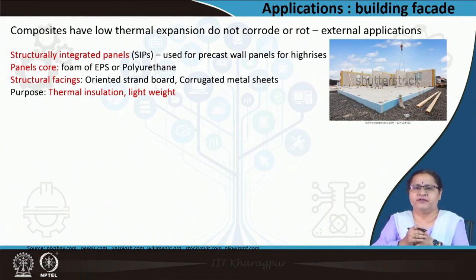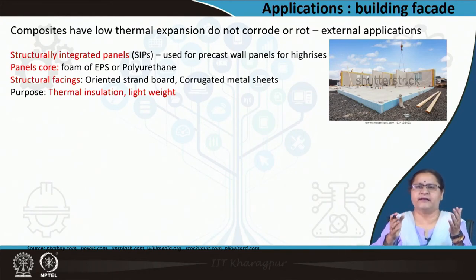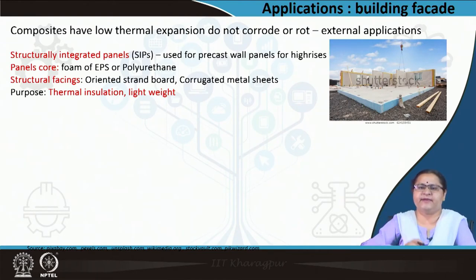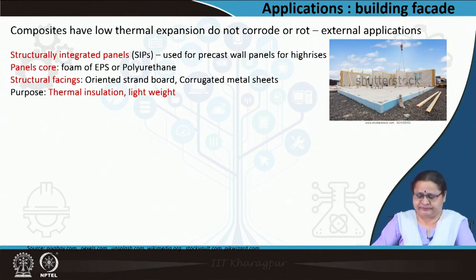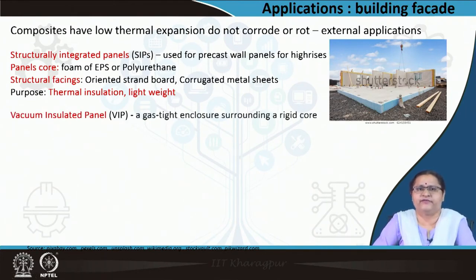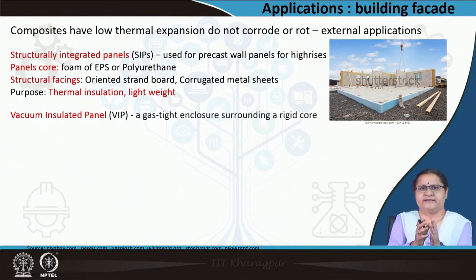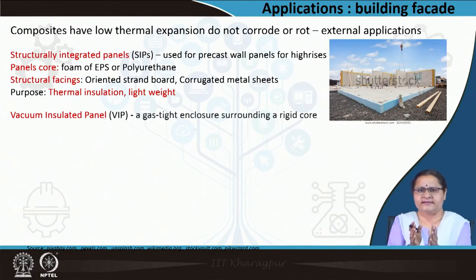The advantage of SIPs is thermal insulation combined with light weight. We can apply them where the structural system is there and use SIPs as filler walls. Light weight reduces the entire building load, so you can choose this for high-rise buildings and tall structures. Coming to the next one — vacuum insulated panels — the gas between the two members is evacuated out, creating a vacuum inside, giving insulation, making it airtight, light in weight, and able to act as an external facade.